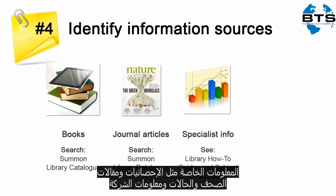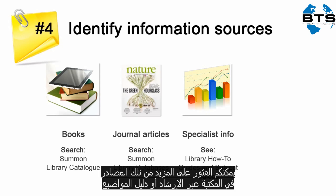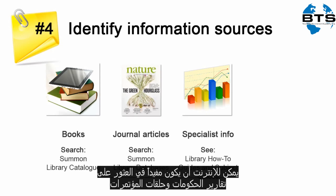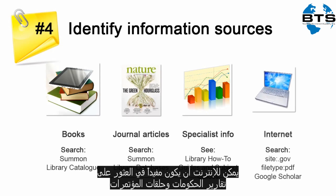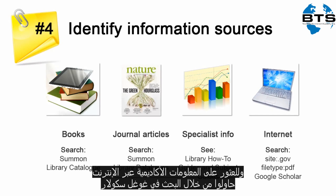Specialist information like statistics, newspaper articles, cases, company information, and patents may also be needed. Find out more about these resources on the library's how-to guides and subject guides. The internet can be useful for finding government reports and conference papers — search for .gov websites or PDFs. To locate scholarly information on the net, try searching Google Scholar.